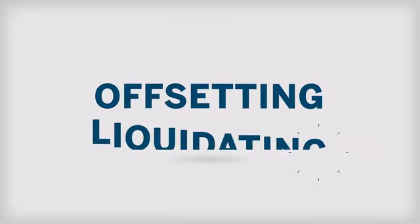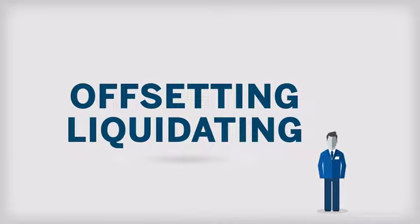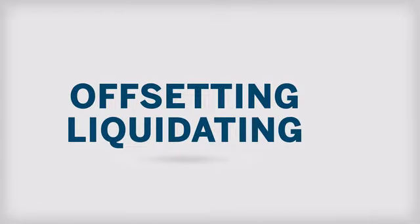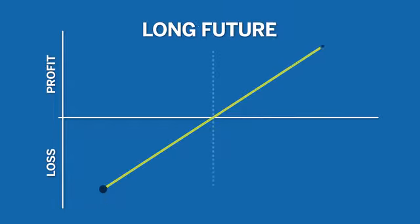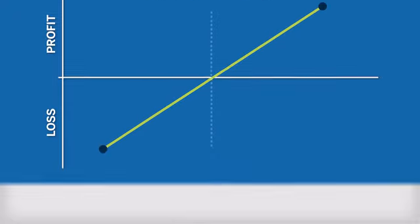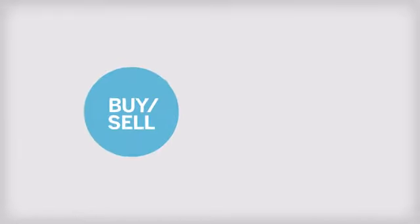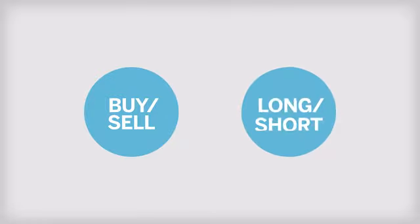Offsetting or liquidating a position is the simplest and most common method of exiting a trade. When offsetting a position, a trader is able to realize all profits or losses associated with that position without taking physical or cash delivery on the asset. To offset a position, a trader must make an opposite and equal transaction to offset the trade.